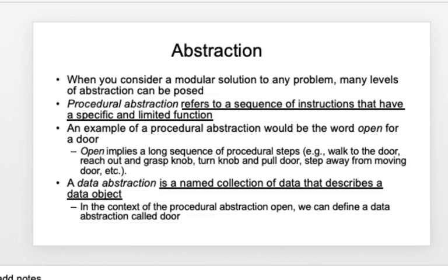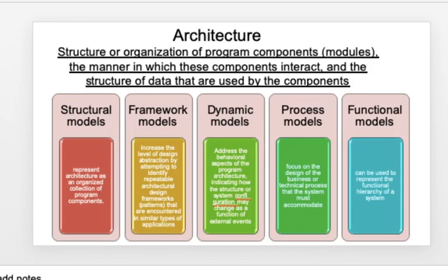Data abstraction is a named collection of data that describes a particular data object. Architecture is a structure or organization of different program components — what we call modules — how they interact with each other, and how their structure is defined. We have different models ranging from structure to framework, dynamic process, and functional models. A pattern conveys the essence of a proven solution to a recurring problem, and is used to solve a particular design problem within a very specific context.